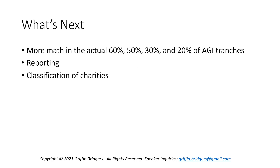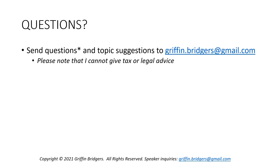Next, we're going to look at the math in the actual 60%, 50%, 30%, and 20% AGI tranches, dig into reporting a little more, and look at classifications of charities. If you have questions or topic suggestions, email me at griffin.bridgers@gmail.com — though I cannot give tax or legal advice in response. Thank you for listening to this episode of 10 Minutes with Griffin, and I look forward to seeing you in the next one.